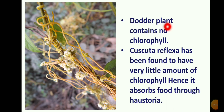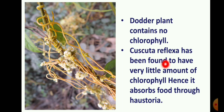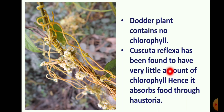The dodder plant contains no chlorophyll, so the photosynthesis process cannot occur. Cuscuta reflexa has been found to have a very little amount of chlorophyll. Hence it absorbs food through haustoria. This plant also undergoes some photosynthesis but is still a type of parasite.